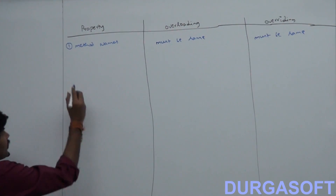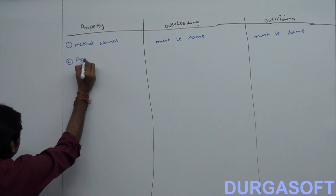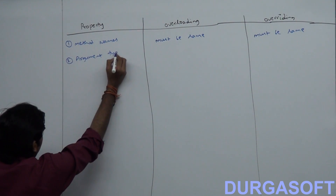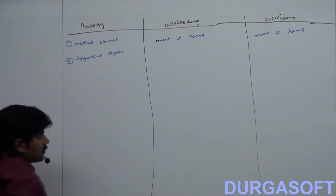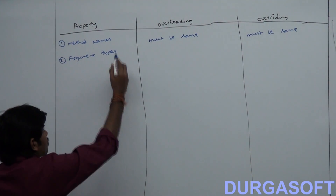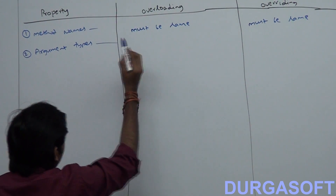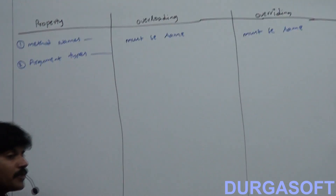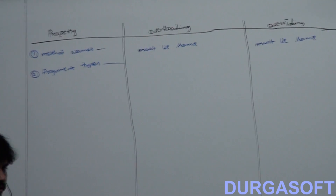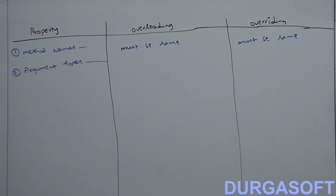Second point: what about argument types? In overloading, argument types must be different — at least the order must differ. For example, M1(int, float) and M1(float, int) — the order within the bracket must be different.